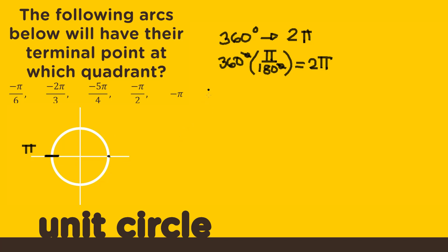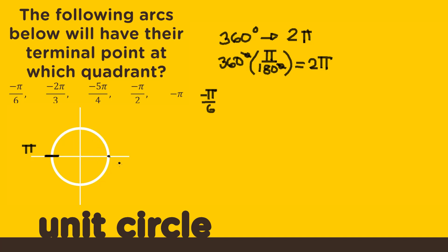Also, since the entire movement of 360 degrees equals 2 pi, half of it equals pi, regardless of whether you're moving counterclockwise or clockwise. Now let's illustrate this using negative pi over 6. If it were just pi over 6 — like in the previous video — we simply divide pi into 6 parts. So we're dividing our semicircle into 6 regions. But since it's negative pi over 6, the movement will be clockwise. This is very important because the location of the quadrant will tell us a lot about the coordinates of our terminal point.